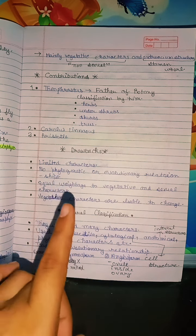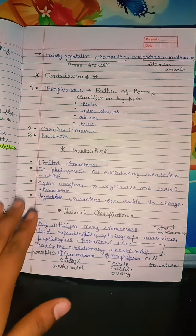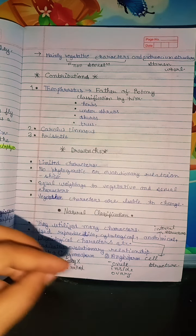Contributions - we gave contributions by Carlos, Aristotle. And the drawbacks - phylogenetic and evolutionary relationships were ignored.